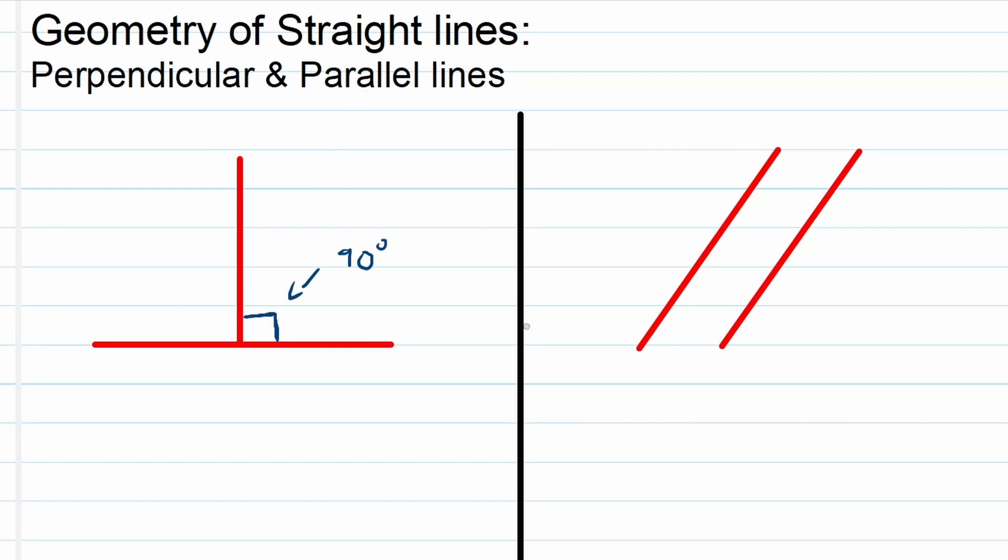Secondly, when we talk about parallel lines, we're referring to two lines that have the exact slope, or in other terminology, the same gradient. This means that the distance between these two lines will always be the same. These two lines will never touch each other; they will always be the same distance apart.